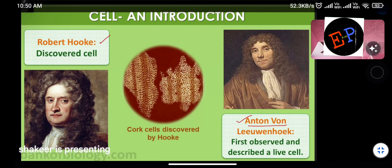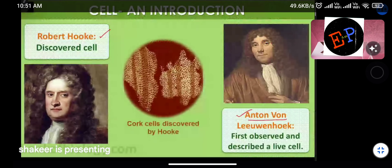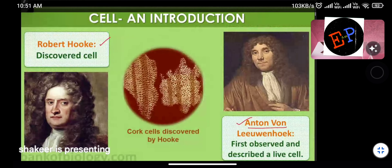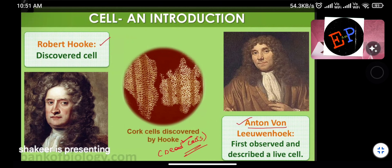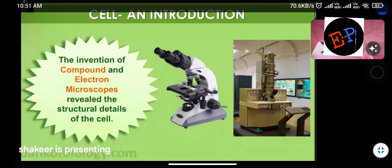Cork cells were discovered by Hooke, and these cork cells were dead cells. These dead cells were first identified by Robert Hooke. The invention of compound and electron microscopes revealed the structural details of the cell.